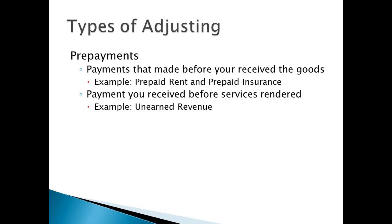What are the different types of adjusting entries? There are three types: prepayments, accruals, and depreciation. For prepayments, these are payments made before you receive the goods — for example, prepaid rent or prepaid insurance — or payments you receive before the services are rendered. These are the two examples we had previously.